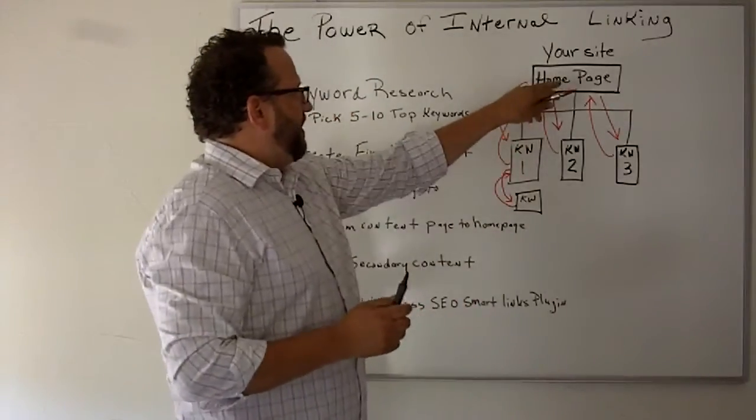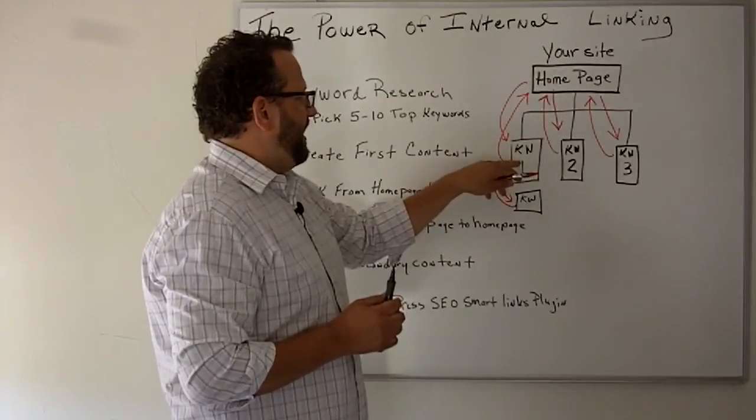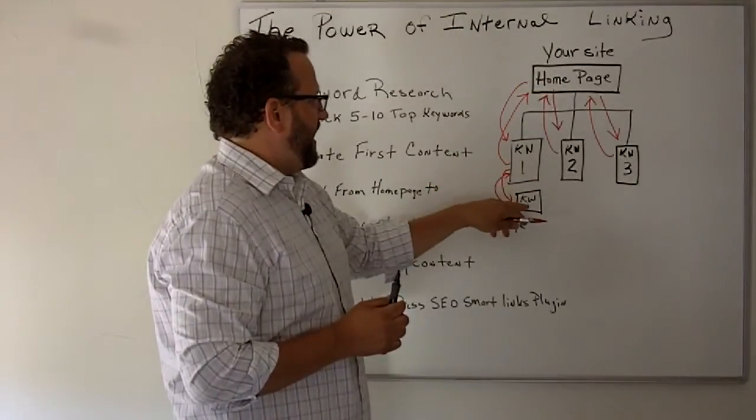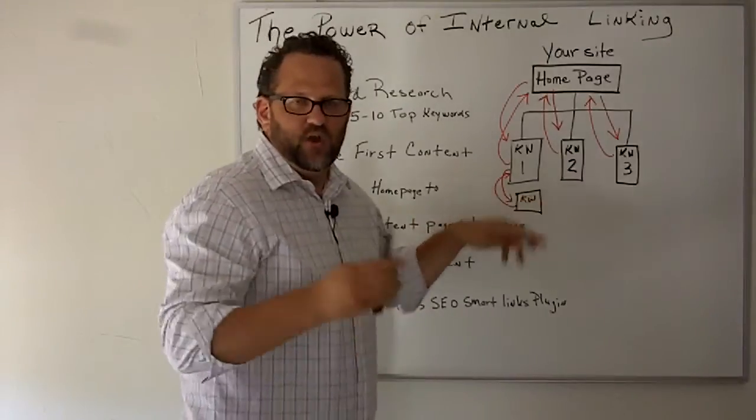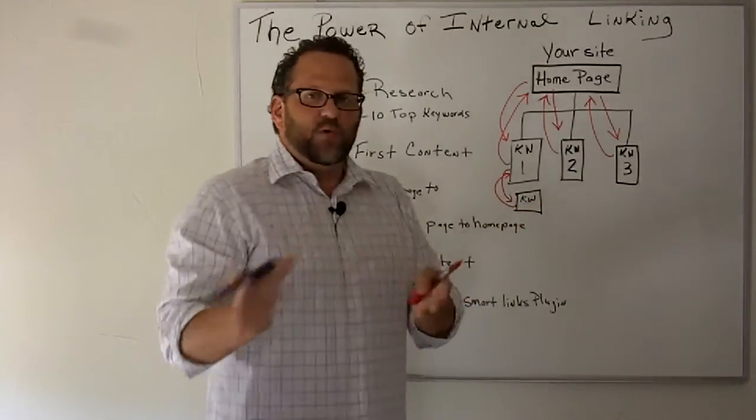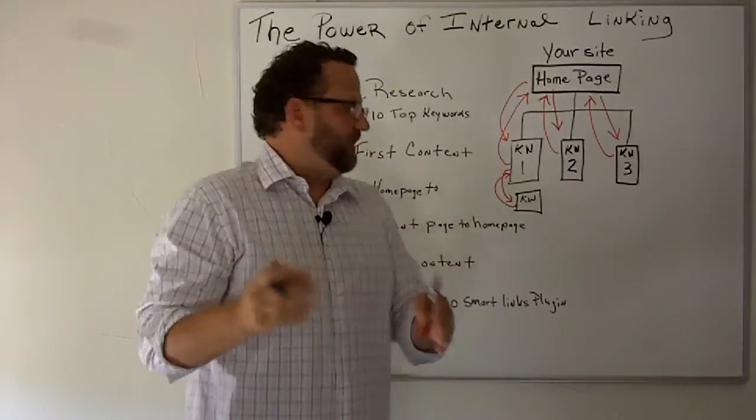So let's say we have our home page which is tea and then we have our content page which is white tea and then we have our sub content page which is organic white tea. Within the plugin setting, it's really easy to do...